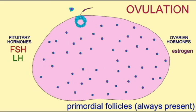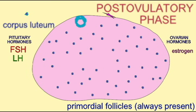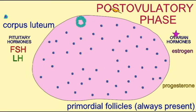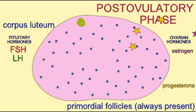After ovulation, some of the cells of the vesicular follicle remain in the ovary and transform to the yellow body, or the corpus luteum — an endocrine structure which secretes progesterone, which will maintain the uterine lining in case of pregnancy.